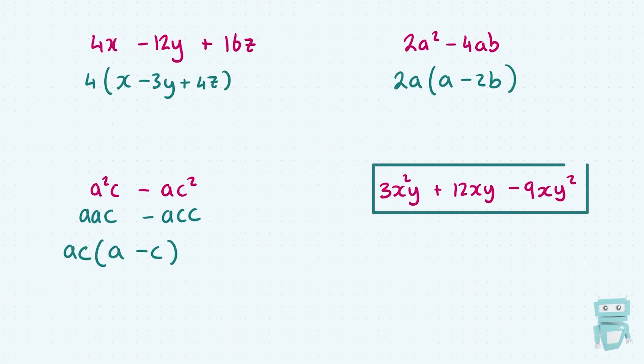Last up, I have 3x squared y plus 12xy minus 9xy squared. So first I'm going to say, are there any numbers in common across the board here? Well, yes, 3 will divide into everything. Are there any variables? And there is. Both of them have at least an x and a y in common.